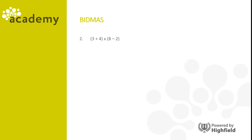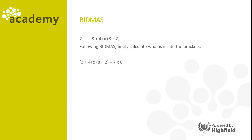In this calculation: (three plus four) times (eight minus two). Following BIDMAS, we calculate what's inside the brackets first. Three plus four is seven, and eight minus two is six. Once the brackets are dealt with, the calculation is seven times six. Working out the multiplication: seven times six is forty-two.